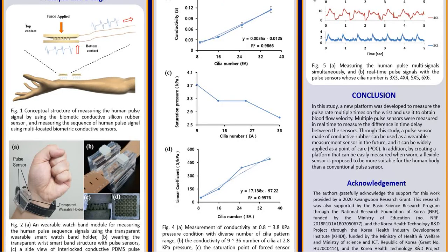In conclusion, in this study, a new platform was developed to measure the pulse rate multiple times on the wrist and use it to obtain blood flow velocity. Multiple pulse sensors were measured in real-time to measure the difference in time delay between the sensors. Through this study, a pulse sensor made of conductive rubber can be used in wearable measurement sensors in the future and can be widely applied as a point of care.